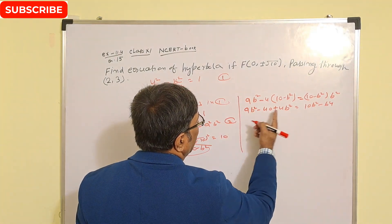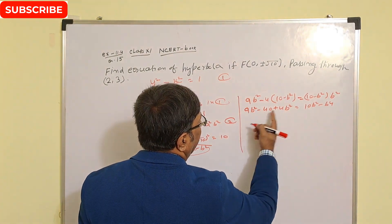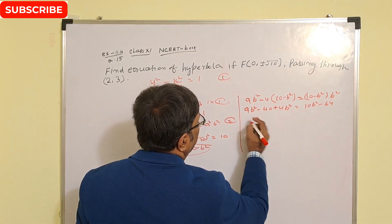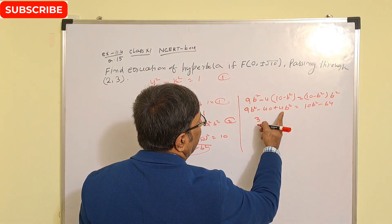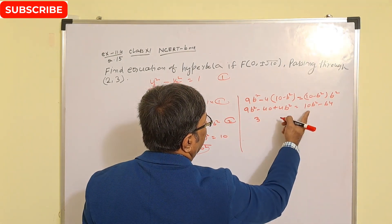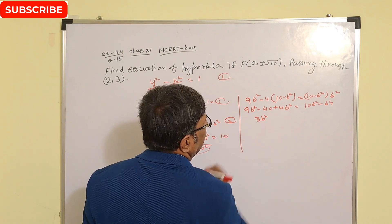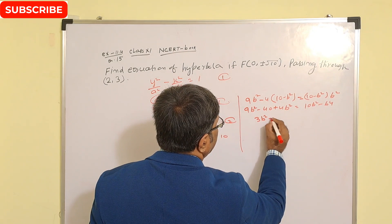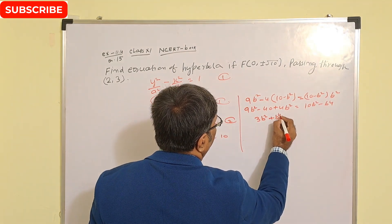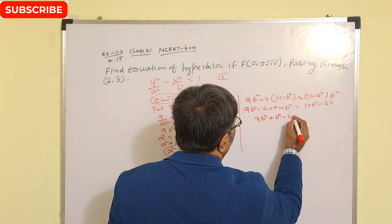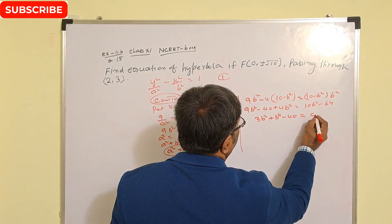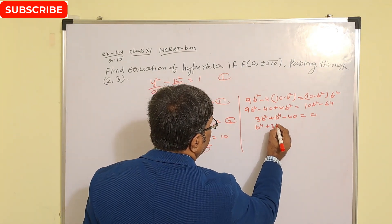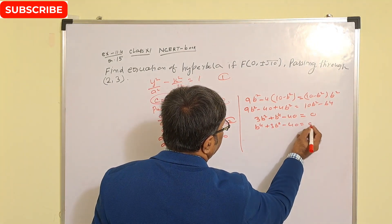Combining like terms on the left: 9b² + 4b² = 13b², and we have 13b² − 40 = 10b² − b⁴. Rearranging: b⁴ + 13b² − 10b² − 40 = 0, which gives b⁴ + 3b² − 40 = 0.